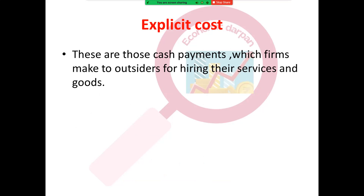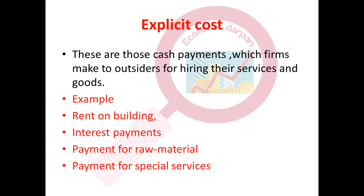Next is explicit cost, which is the opposite of implicit cost. Explicit cost involves resources that the producer does not own and has to purchase or hire from outside — it requires actual cash payment for services or goods purchased from outside, such as raw materials. These payments to outsiders are recorded in the books and are therefore called accounting cost. For example, rent on a building — if the producer has no land of his own, he will rent a building and pay rent. If he has no capital, he will take a loan from the bank and pay interest.